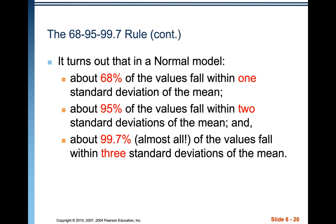In a normal model, about 68% of the values fall within one standard deviation, 95% of the values fall within two standard deviations, and 99.7% fall within three standard deviations of the mean. This is for normal models only — you cannot use it for other models.